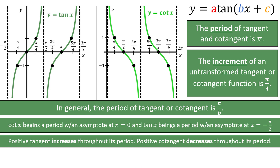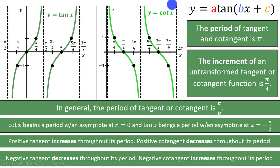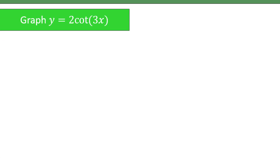If you have a negative sign on the front of your tangent or cotangent function, that will just switch things around. A negative tangent function will actually decrease throughout its period, kind of like cotangent. A negative cotangent function will actually increase throughout its period. So when you have a negative sign on the front of tangent or cotangent, they start looking like each other. Let's take a look at some examples.